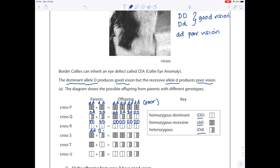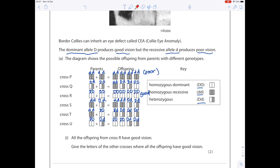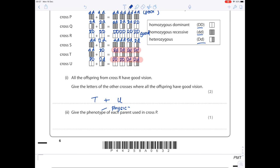Carrying on with this: all the offspring from cross R have good vision. That makes sense - they're all big D big D. Give the letters of the other crosses where all the offspring have good vision. We're looking for where we have both big D big D and big D small d in order for them to all have good vision. If I don't see that combination, they won't have good vision. That's this bunch and this bunch, so that's T and U. Give the phenotype of each parent using cross P - basically their physical appearance, so whether they have the disease or not.